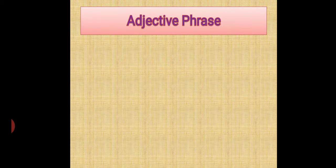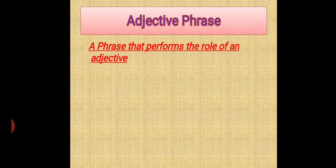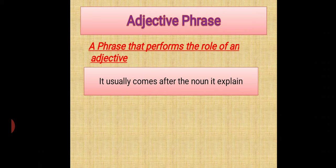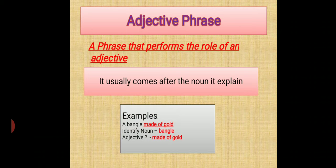Now moving towards the next phrase, that is adjective phrase. A phrase that performs the role of an adjective. It usually comes after the noun it explains or qualifies. For example: 'A bangle made of gold.' Your noun is bangle, and 'made of gold' comes after that — so that becomes your adjective phrase.